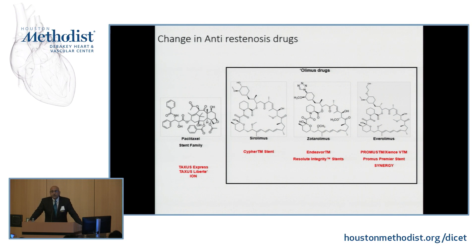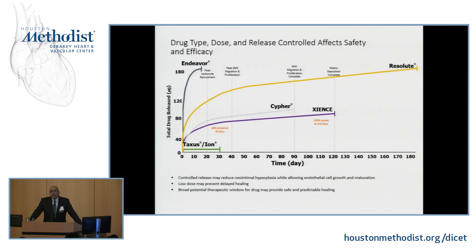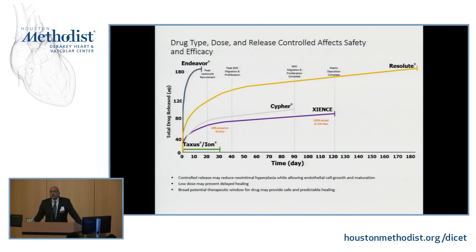We have also evolved in anti-restenosis medications. A drug-eluting stent placed in 2003 or 2005 would have used Paclitaxel, an anti-malignancy drug in the same group as Taxol used in breast cancer. We have moved on to the Limus group of drugs — Everolimus, Sirolimus, and Zotarolimus — and all new-generation stents today use the Olimus family. Over the last decade we have learned the ideal drug dose, duration of drug delivery, and stent design. Three to six months of drug elution is now considered ideal, and all newer stents deliver within that window.